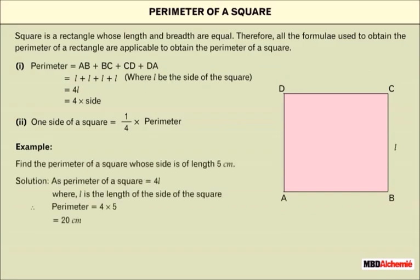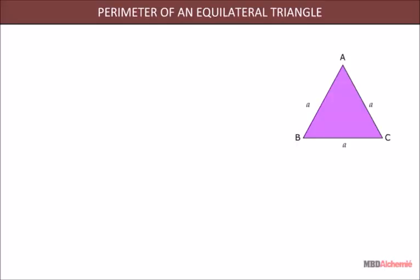For example, here we will discuss about perimeter of an equilateral triangle. Consider an equilateral triangle with each side equal to A centimeter.